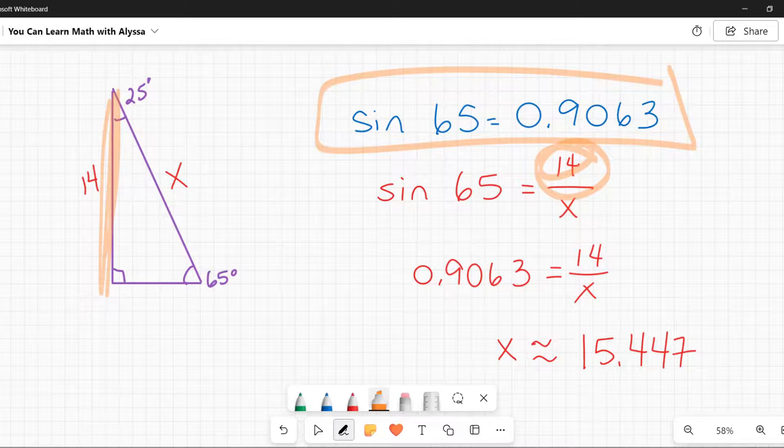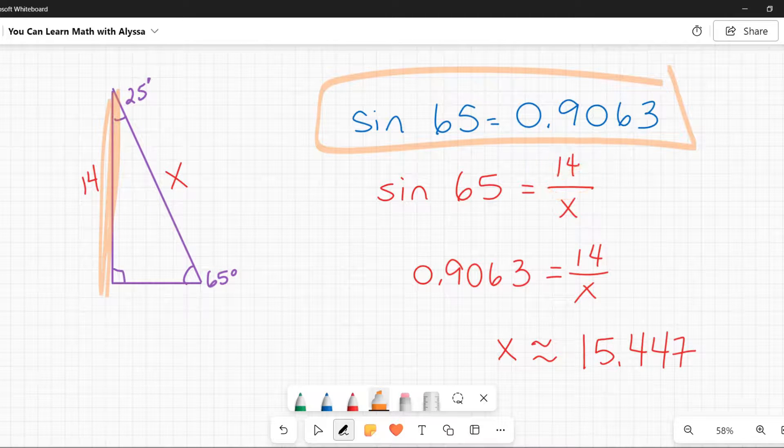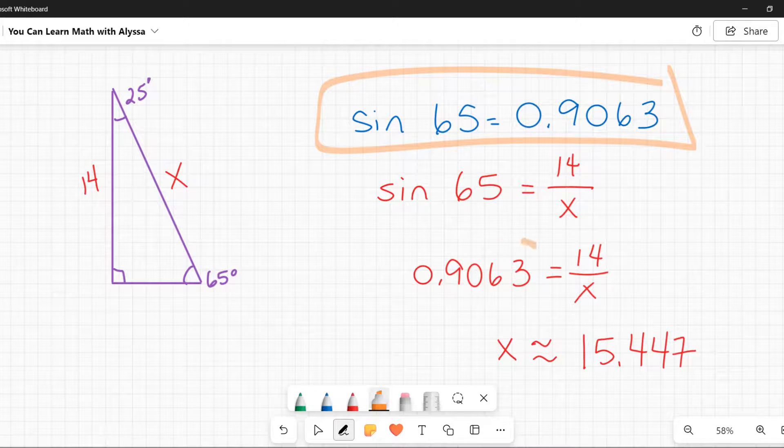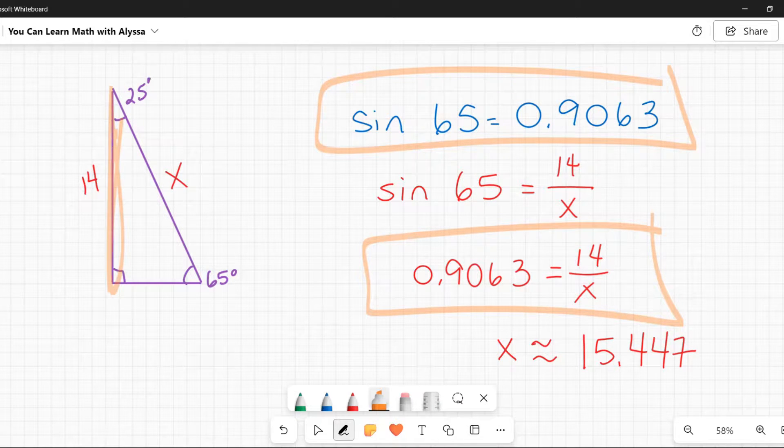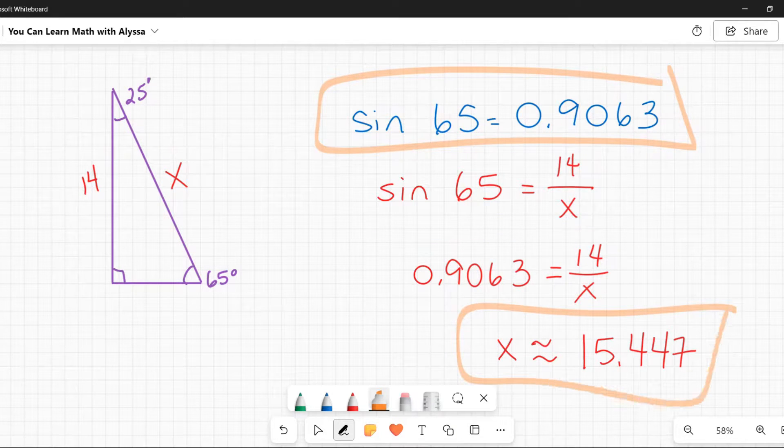The length of my opposite side is 14, my hypotenuse is x, and I know that ratio is always going to be the sine of 65, which is 0.9063. So I know 0.9063 is equal to opposite 14 divided by hypotenuse x. I can use my algebra skills then to solve for x and figure out the length of that side.